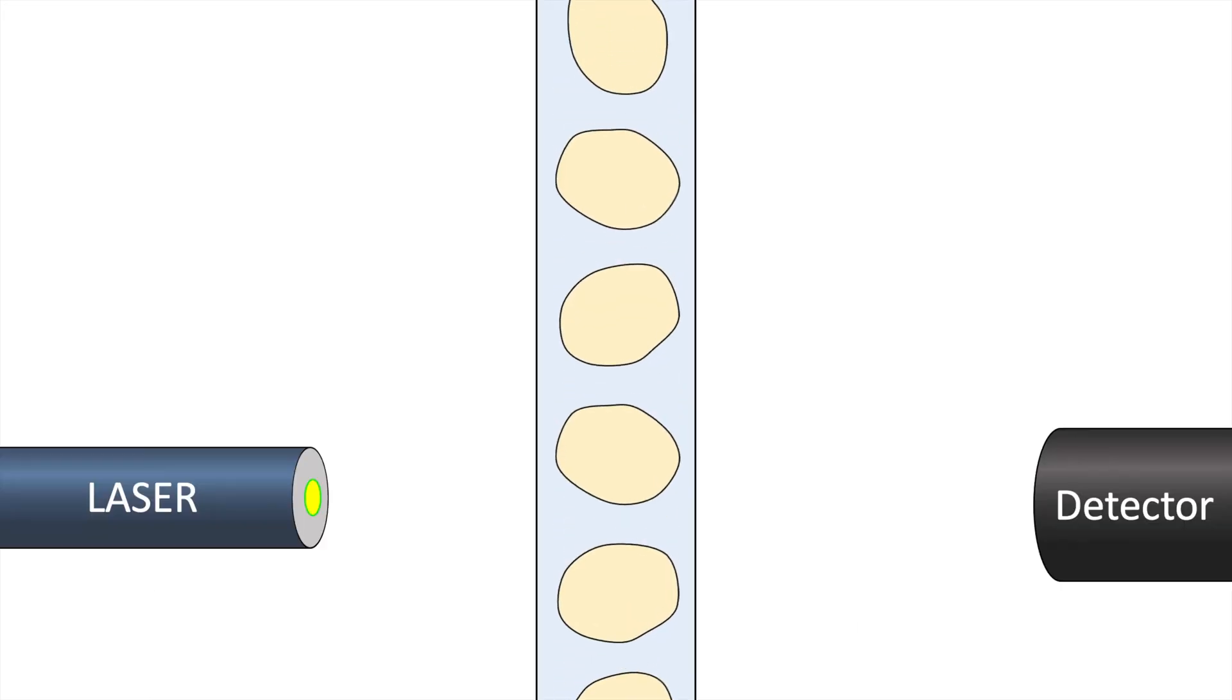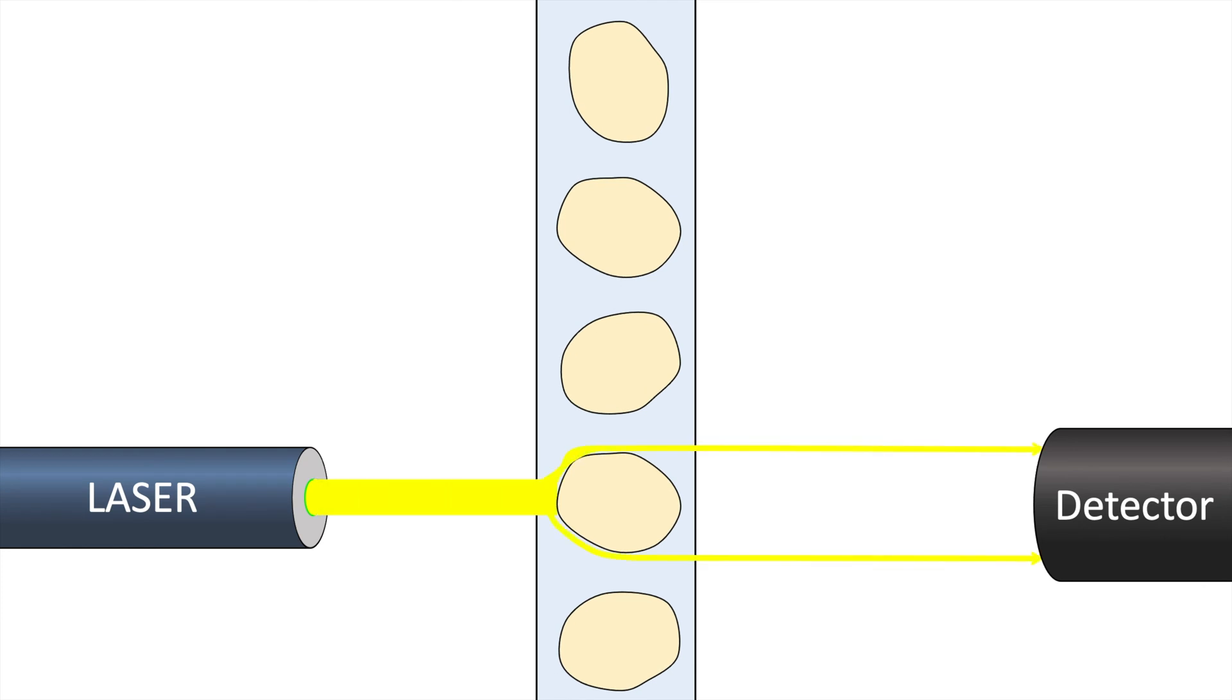Single cells in the fluidic stream pass a laser and can be analyzed according to different parameters such as size or shape.